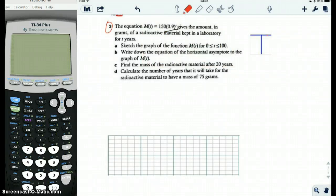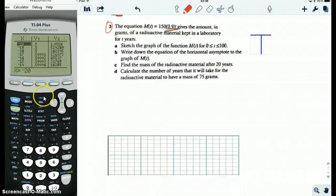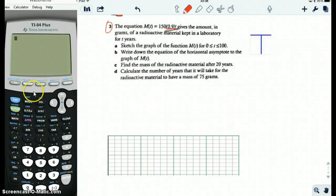This is really similar to the exploration, but instead of drugs in the blood, what you're working with is radioactive material. But it's the same principle. They both decline at an exponential rate, so the graphs will look similar. Let's see. We will use the calculator to graph the function first.